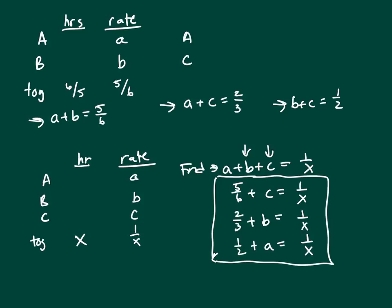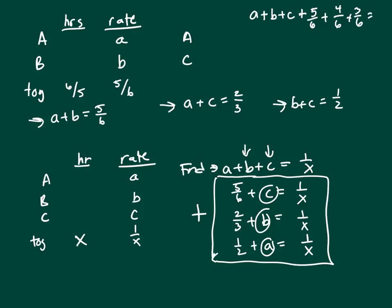So let's look at these three equations. What I want to do is add them together. Adding the left-hand sides gives me two lots of A plus B plus C, plus these three fractions. Getting a common denominator of six: five-sixths plus two-thirds is four-sixths, and one-half is three-sixths. That gives twelve-sixths, which is two. Adding the right-hand sides gives one over X plus one over X plus one over X, which is three over X. So A plus B plus C plus two equals three over X.